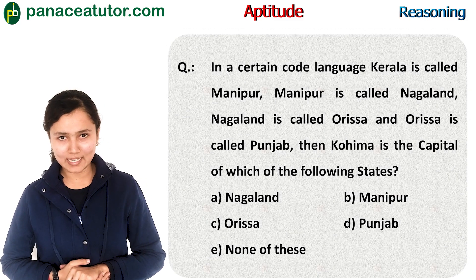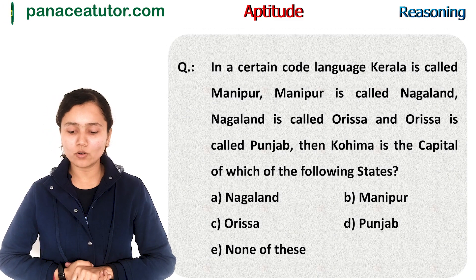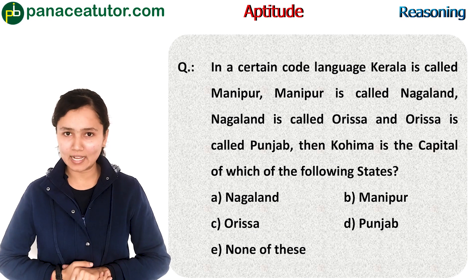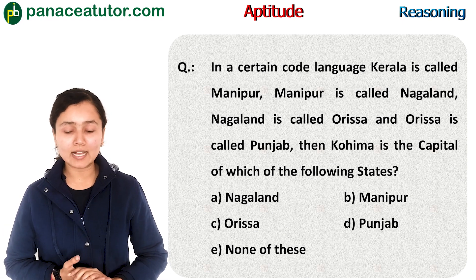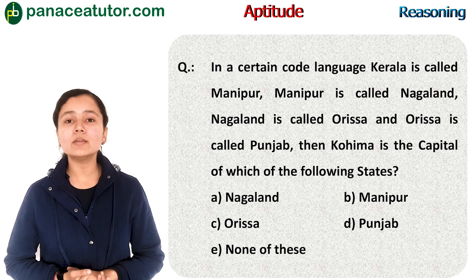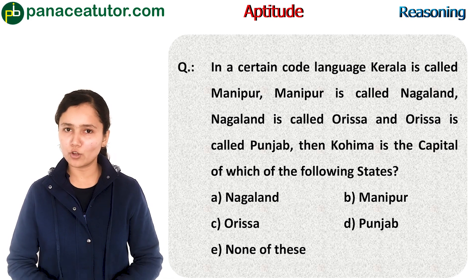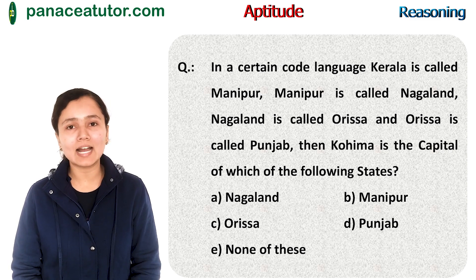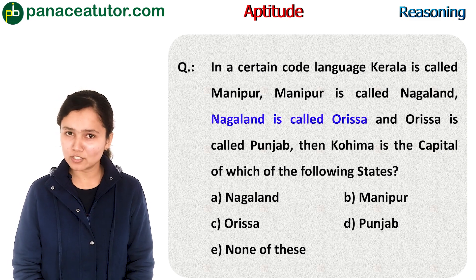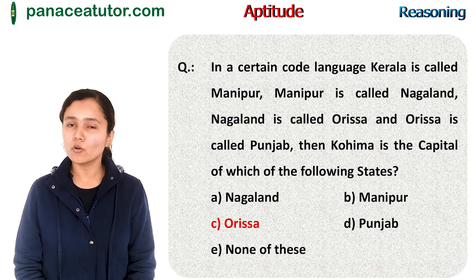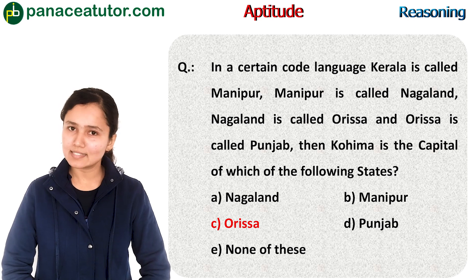Next question: In a certain code language, Kerala is called Manipur, Manipur is called Nagaland, Nagaland is called Odisha, and Odisha is called Punjab. Then Kohima is the capital of which of the following states? We know Kohima is the capital of Nagaland, and in the question it is written 'Nagaland is called Odisha'. So the answer will be Odisha, that is option C.